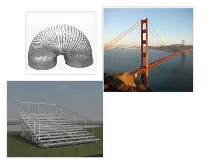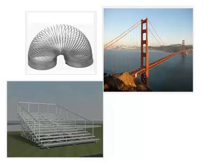The slinky that we used in the beginning of class is also a second order system, and so are many real life things that sway or vibrate. For example, a suspension bridge is a second order system — when wind blows on the bridge and causes it to sway, that is a second order response where the force of the wind is the input and the position of the bridge is the output. Bleachers are also a second order system; when a crowd walks up bleachers and they sway or vibrate, the force of the people's feet is the input and the position of the bleachers is the output.